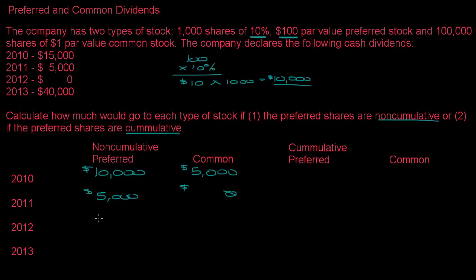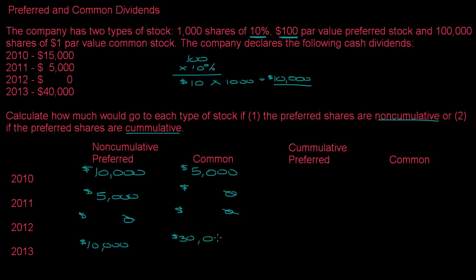In 2012, the company paid nothing, so neither class of shareholder gets anything — zeros for both. In 2013, there's a $40,000 dividend. Preferred shareholders get the first $10,000 and the remaining $30,000 goes to common shareholders.